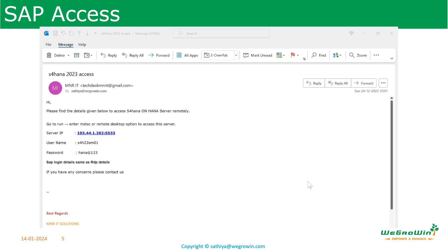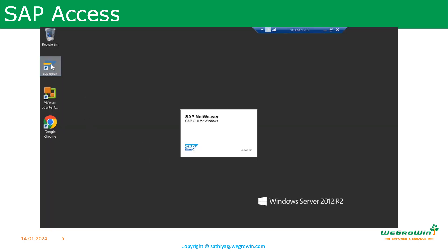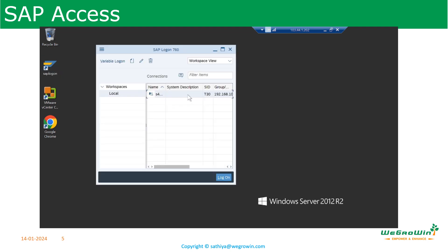Now let us see how to access SAP. It is the same user ID and password given. Go to the SAP Logon icon, and it will bring you to the login page. From here, double-click the server — there will only be one server listed there.